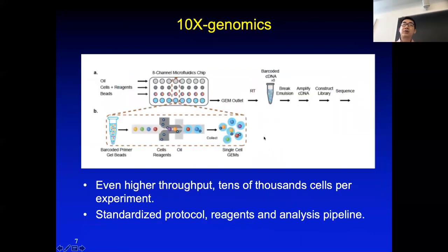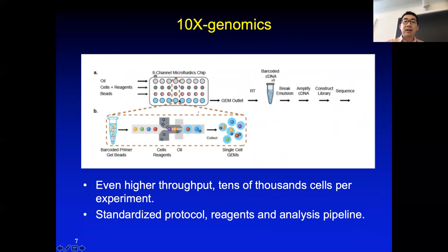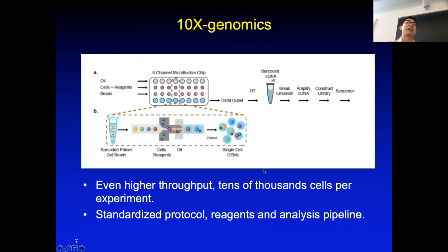Another boost to this field is that droplet-based methods now have a commercial version from the company 10x Genomics. They developed a microfluidics machine with eight channels — each channel works like a droplet machine — making it more efficient at processing cells and allowing more cells to be processed at one time. Because it is a commercial product, it has more standardized protocols, standardized reagents, and analysis pipelines, making results more comparable between different studies.